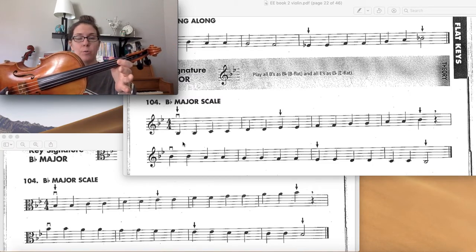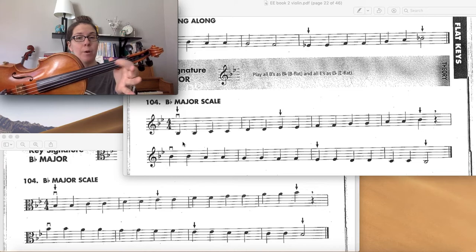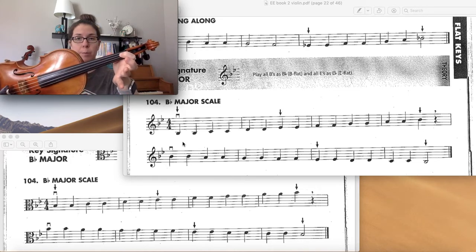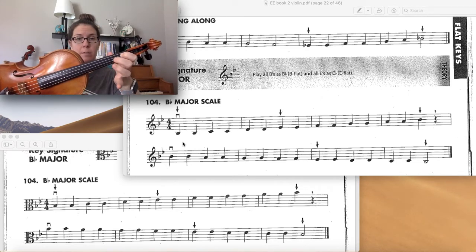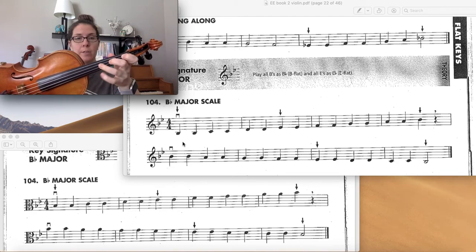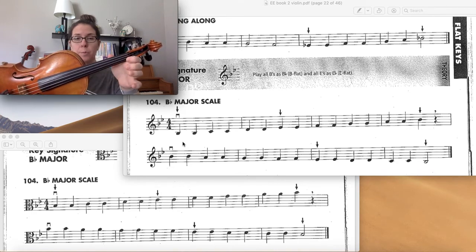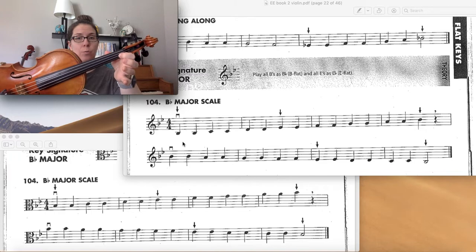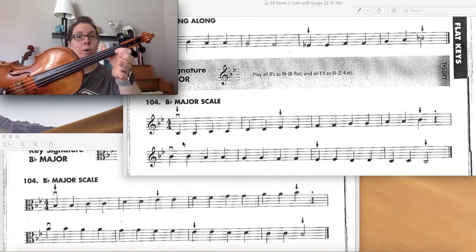Then on the D-string we'll play open D and then we have to remember to tip our first finger all the way back to play low 1 for E-flat. We'll have a space to F, space to G. After we play open A our highest note will be B-flat on the A-string with a low 1.